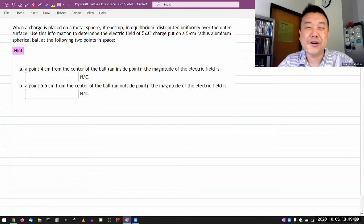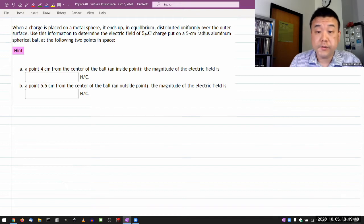It says, when a charge is placed on a metal sphere, it ends up in equilibrium distributed equally, uniformly over the outer surface.